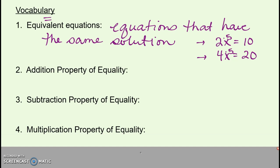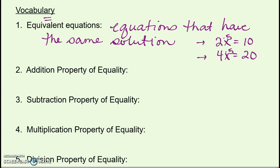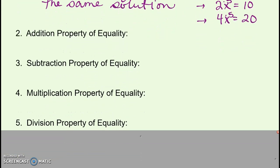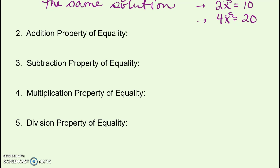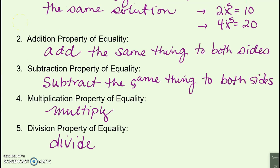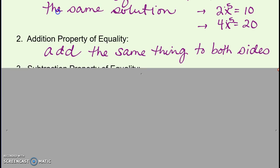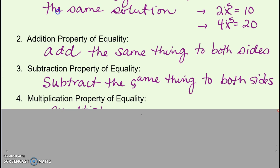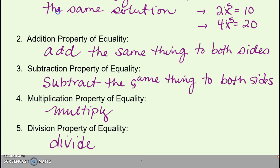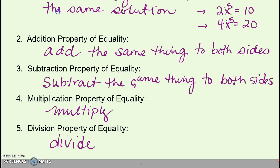We're going to use four properties to create equivalent equations: the addition property of equality, the subtraction property of equality, the multiplication property of equality, and the division property of equality. The addition property means I can add the same thing to both sides of an equation and get an equivalent equation with the same solution. Similarly, I can subtract, multiply, or divide the same thing on both sides, and all of these give me another equation that's still equivalent to the one I started with.